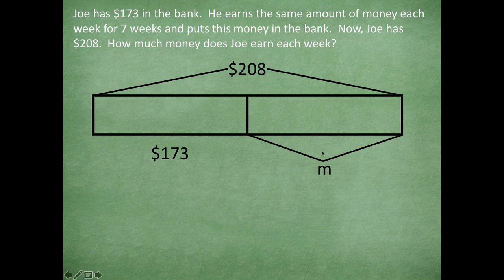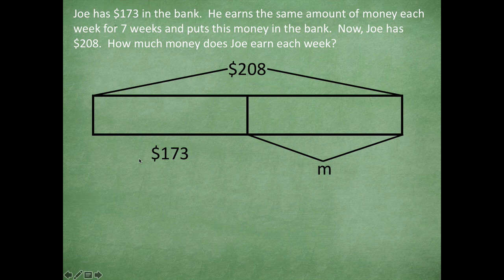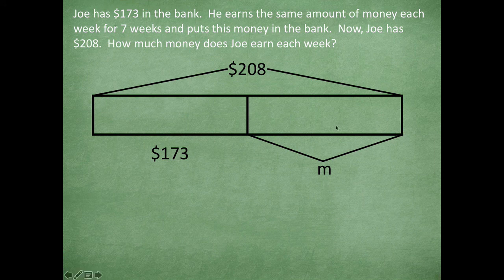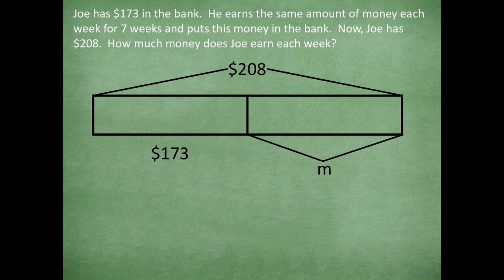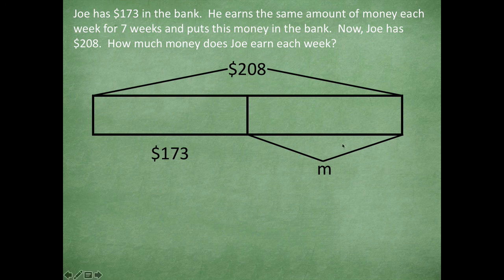I still can't figure out this M yet. I know that total is $208 and I know that he started with $173 in the bank. In order for me to figure out how much this is, which operation do you think I'm going to use? Do you think I'm going to multiply 173 and 208? Divide those two numbers? Add those two numbers? Or am I going to subtract those two numbers?